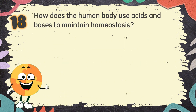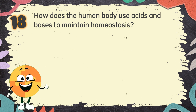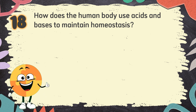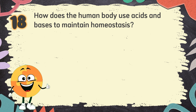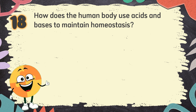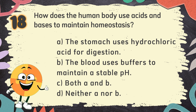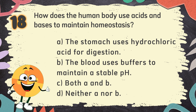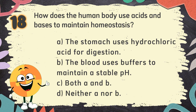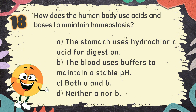Number 18. How does the human body use acids and bases to maintain homeostasis? The choices are: A. The stomach uses hydrochloric acid for digestion, B. The blood uses buffers to maintain a stable pH, C. Both A and B, D. Neither A nor B.